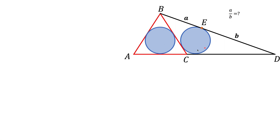An inscribed circle is the largest circle you can put inside of a triangle, and that circle is going to be tangent to all three sides of the triangle. Point E is the tangency of the circle with side BD. Let's mark point F as the point of tangency of the circle with side CD, and G as the point of tangency of the circle with side BC.